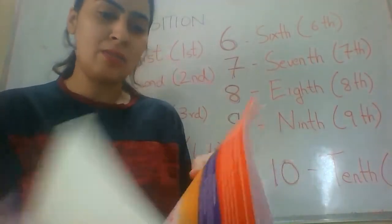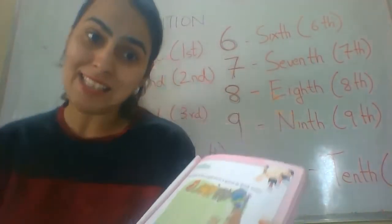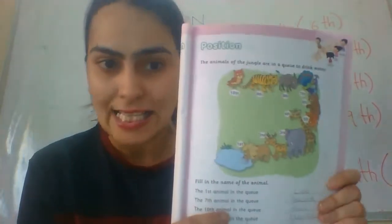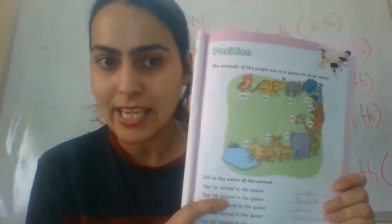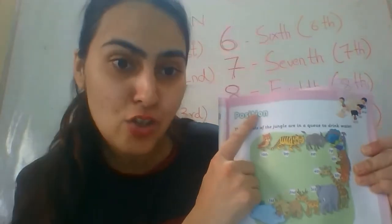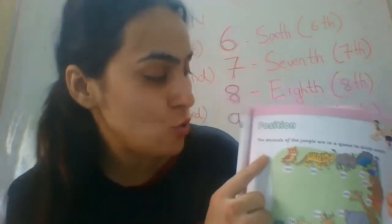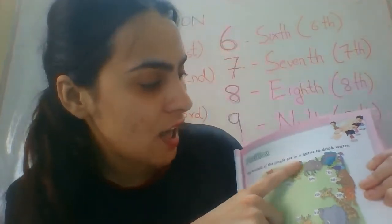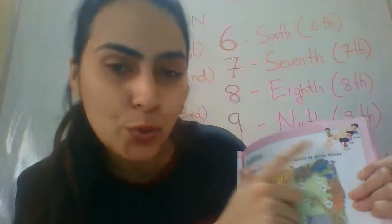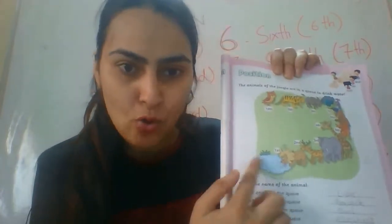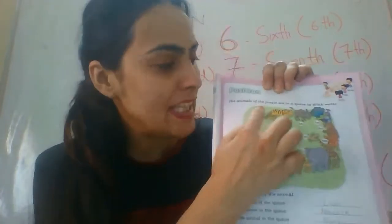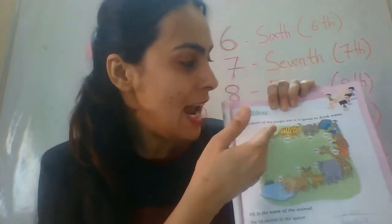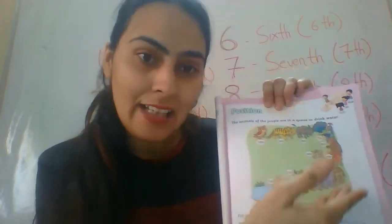On page number 49 we have this exercise, which is based on positions. The question is: the animals of the jungle are in a queue to drink water. There is a pond where the animals have to drink water and they are standing in a queue.